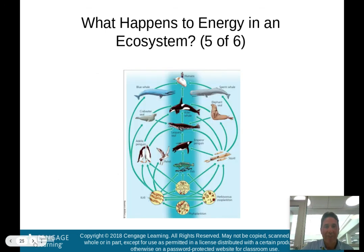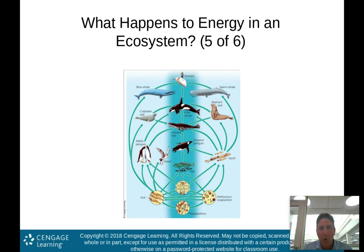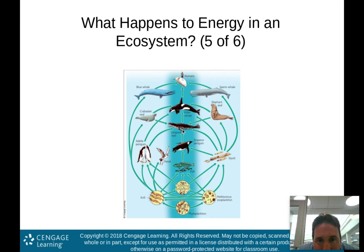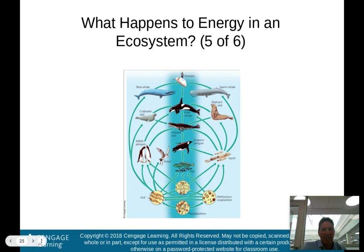This is an aquatic food web in the southern hemisphere. You can see the crab-eater seal gets eaten by the killer whale and also by the leopard seal. Humans eat all of this. And here are your krill and phytoplankton that get eaten by fish, and so on.